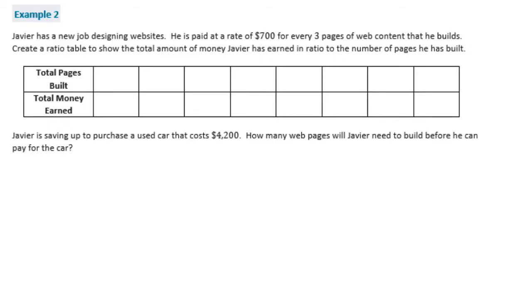Example 2. Javier has a new job designing websites. He is paid at a rate of $700 for every 3 pages of web content that he builds. Create a ratio table to show the total amount of money Javier has earned in ratio to the number of pages he has built. So let's start by filling in what we know. We know that for every 3 pages built, he gets $700.